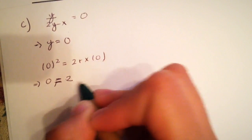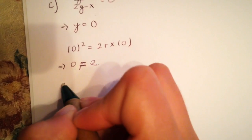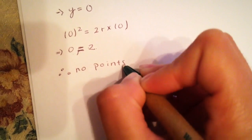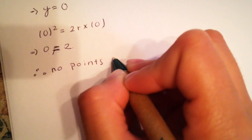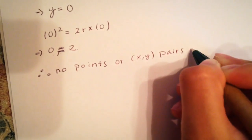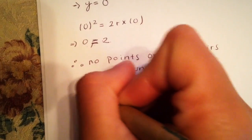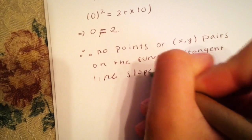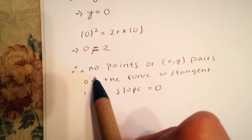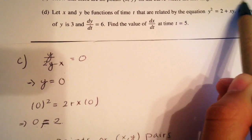Simplifying gives us 0 equals 2, which is not true. Therefore, we have proved that there are no points, or x and y pairs, on the curve with tangent lines having slope equal to 0, meaning there are no points on the curve where the line tangent to the curve is horizontal.